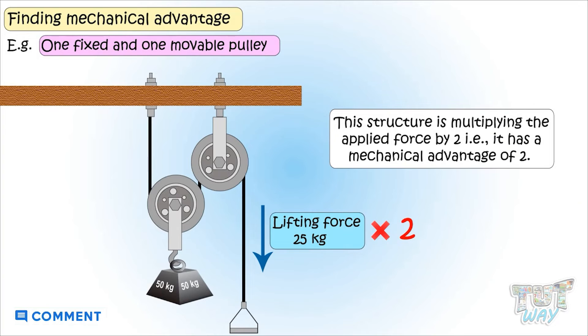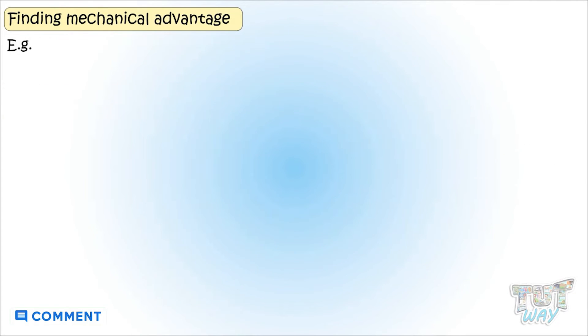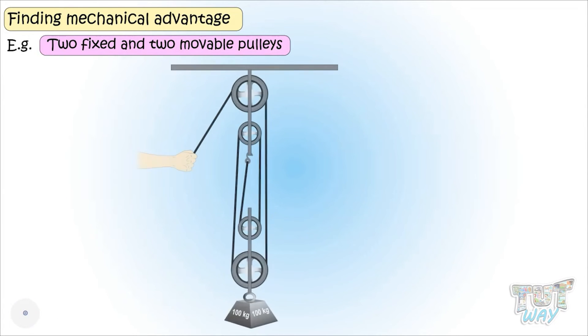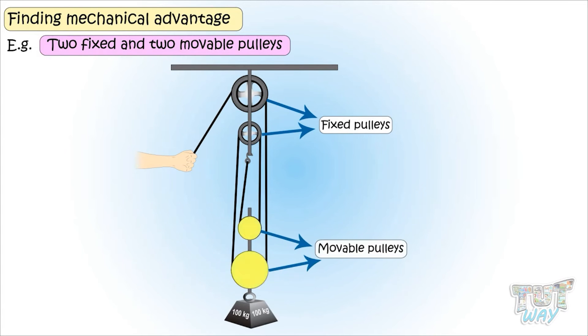Now, here we have next an example. It is two fixed and two movable pulleys. This is a compound pulley setup. Two fixed pulley wheels are attached to the fixed support, and two movable ones are attached to the weight.